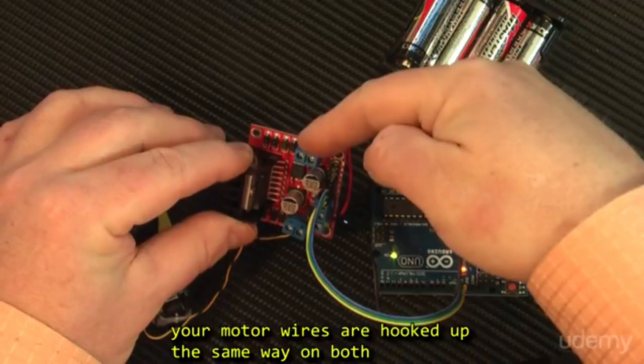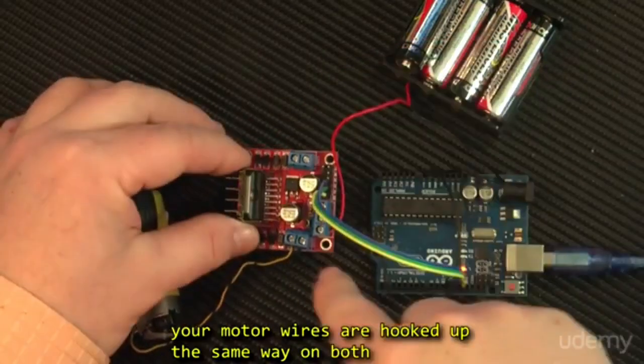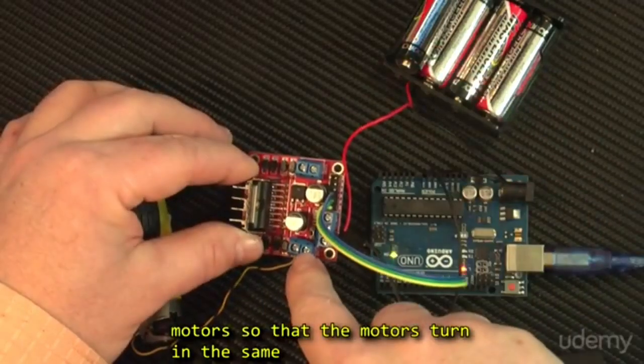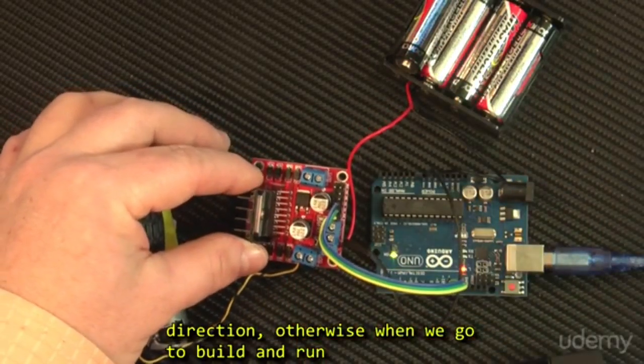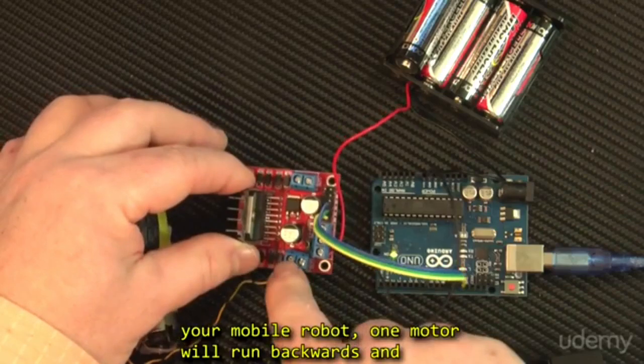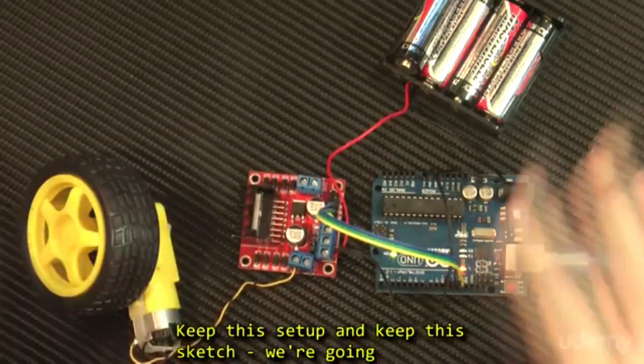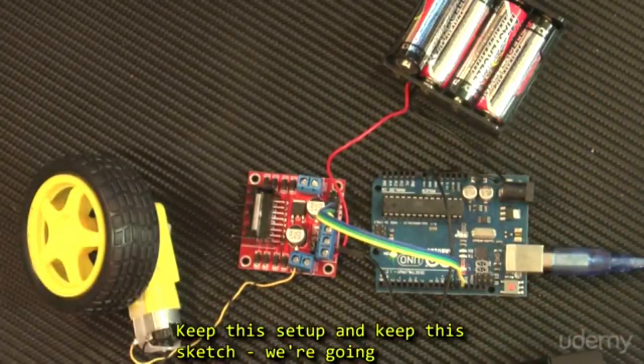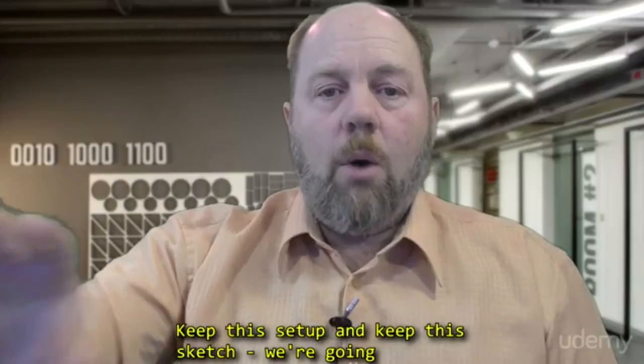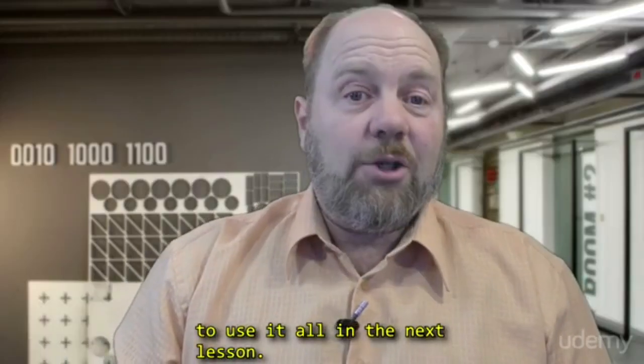Make sure your motor wires are hooked up the same way on both motors so that the motors turn in the same direction. Otherwise, when we go to build and run your mobile robot, one motor will run backwards and the other forwards. So keep this setup, and keep this sketch. We're going to use it all in the next lesson.